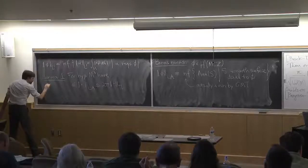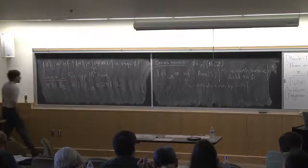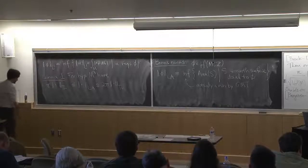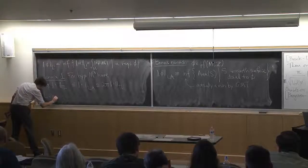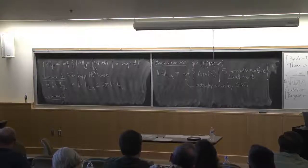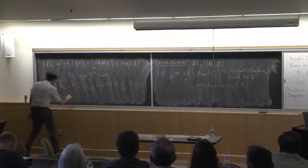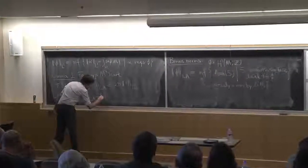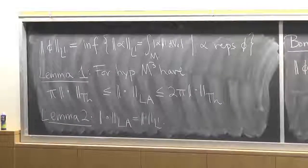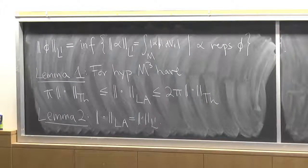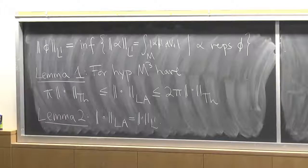These are the extra bonus norms, and there are two facts I need. Lemma 1: the least area norm is very close to the Thurston norm — for a hyperbolic 3-manifold, the least area norm is bounded above by 2π times the Thurston norm and bounded below by π times the Thurston norm. So up to a factor of 2, it is just the Thurston norm. Lemma 2: the least area norm actually equals the L1 norm. So I'm not really giving you two bonus norms — just one.